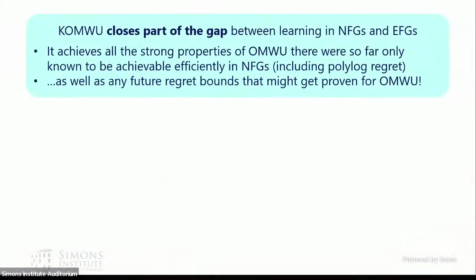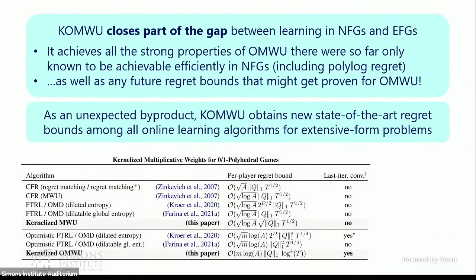If each kernel evaluation can be performed in time polynomial in the dimension, then optimistic multiplicative weights can be simulated in polynomial time. This kernelized OMW achieves all the strong properties of optimistic multiplicative weights that were so far only known to be achievable in normal form games, including polylogarithmic regret. And as an unexpected byproduct, kernelized OMW obtains new state-of-the-art regret bounds among all online learning algorithms for extensive form games — doing better than decades of research on specialized methods.